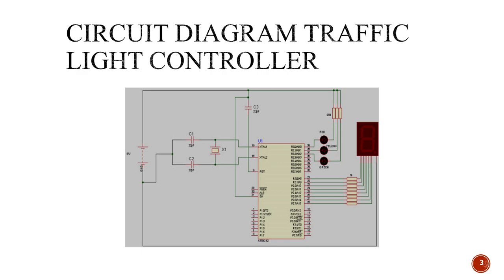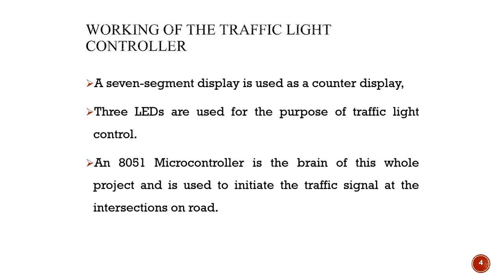This is the block diagram and circuit diagram for the traffic light controller. The components used are LED lights for indication purposes — three LED lights — and a counter display. Port 2 is connected to the counter display, and Port 0 is connected to the three LED lights. A seven-segment LED display is used as the counter display.